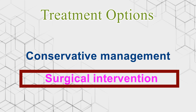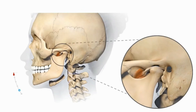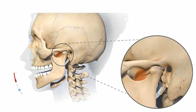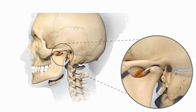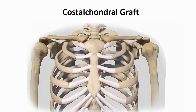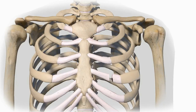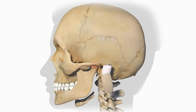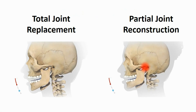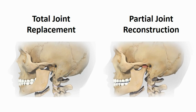Surgical intervention includes disc reconstruction, a procedure of discectomy to reposition the disc in its normal position, indicated in disc displacement. A costal chondral graft is a surgical procedure in which a graft is taken from the ribs, indicated in cases of damaged joint or TMJ ankylosis. Partial joint reconstruction and total joint replacement are surgical procedures used to replace the TMJ joint with an artificial joint.